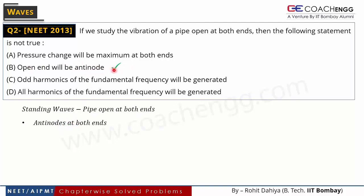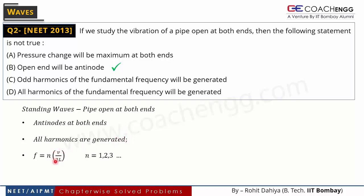So option B is correct — open ends will be antinodes. All harmonics are generated. The wave with the lowest frequency generated inside the pipe will have frequency V/2L — this is called the fundamental frequency. All other waves generated will have frequencies that are integral multiples of V/2L. This statement is shown as 'all the harmonics are generated.'